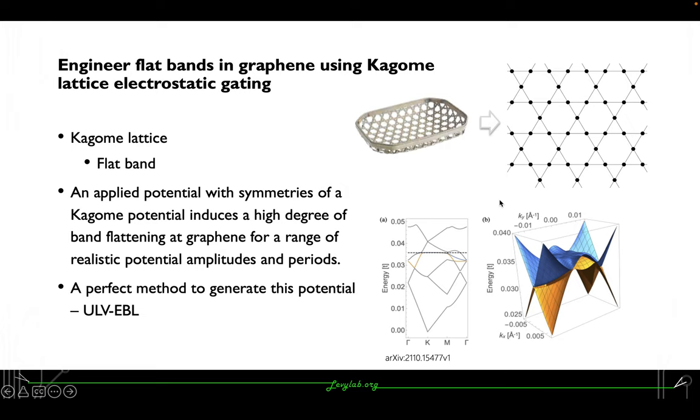There is a recent publication, an archive from Dr. David Packer, showing that an applied potential with symmetries of a Kagome potential induces a high degree of band flattening in graphene for a range of realistic potential amplitudes and periods.